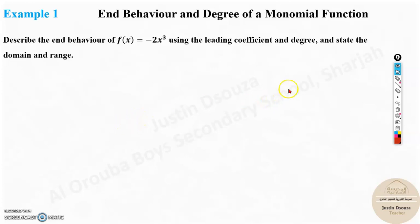In example one, we are dealing with monomial functions. We need to find its end behavior and degree. It is easy to find the degree, the leading coefficient, and then go to the end behavior. Describe the end behavior of the function -2x³ using the leading coefficient and degree, and state the domain and range.